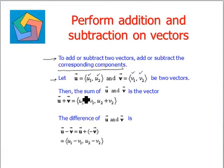When we find the sum of the two vectors, that is u and v, this is given by vector u plus vector v. Now, it says add the corresponding components. So, u1 is added to v1 and u2 is added to v2.